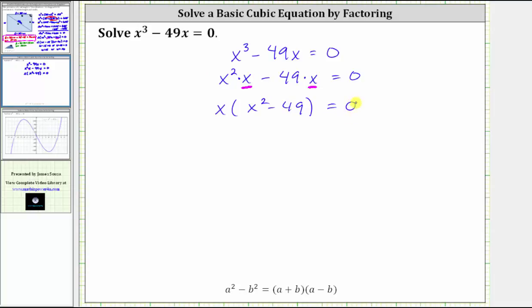Now we need to see if we can factor x squared minus 49 further. We should recognize this as a difference of squares because x squared is a perfect square, and so is 49. 49 is equal to seven squared, or seven times seven.